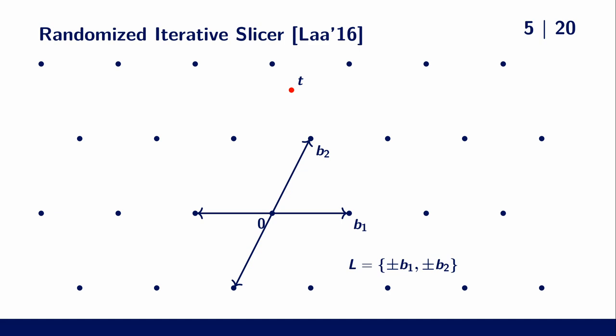Therefore, a good question is what happens if we pick a smaller list. In this example, we only have plus minus b1 and b2 in our list.